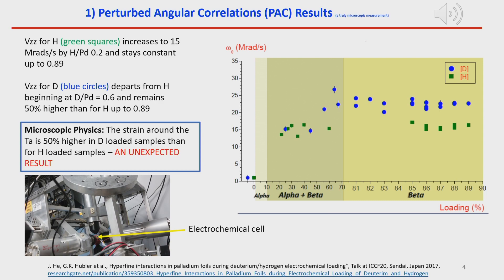Here we show the electrochemical cell surrounded by gamma detectors at CERN. The plot shows the results where the precession frequency in mega-rads per second is plotted versus the concentration of H or D. H is the green squares, and we see it's zero initially, then jumps up to about 15 mega-rads per second over the whole range of concentration. However, deuterium, shown as circles, is greater than H at about 50% greater. So the microscopic physics is that the strain around the palladium is 50% higher in D-loaded samples than H-loaded samples — a very unexpected result.